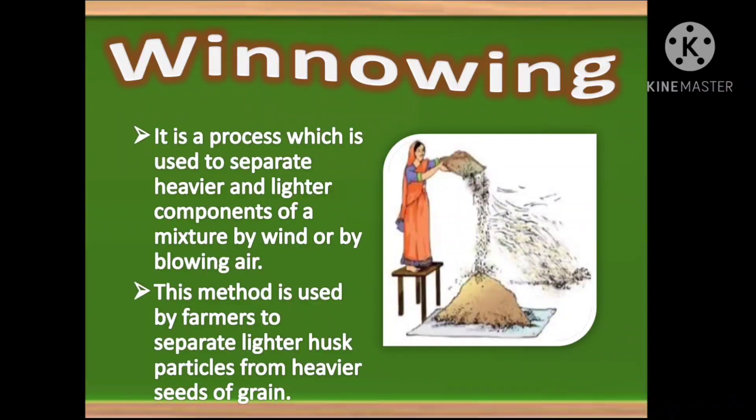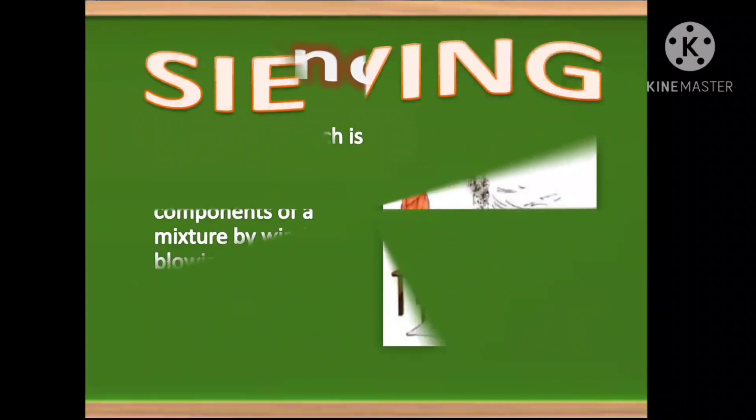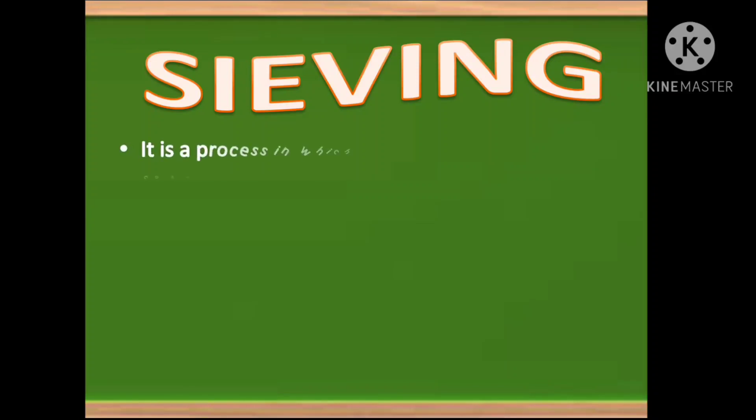This method is used by farmers to separate lighter husk particles from heavier seeds of grain. You can see in the picture also. Our next method of separating solid from solid is sieving.